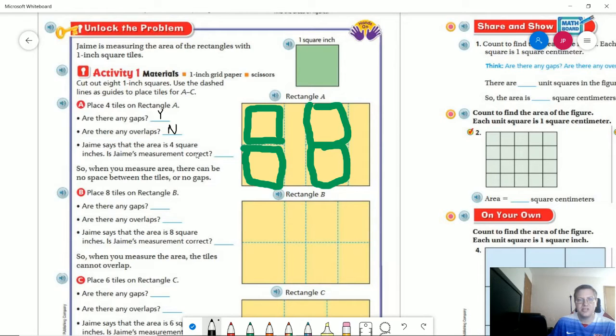Jamie says the area is four square inches. Is that correct? No, because there's an additional amount of space that is not accounted for. All right, so let's take a look at part B now.